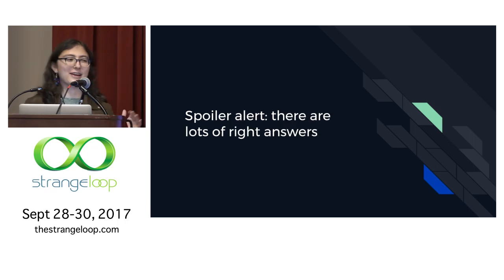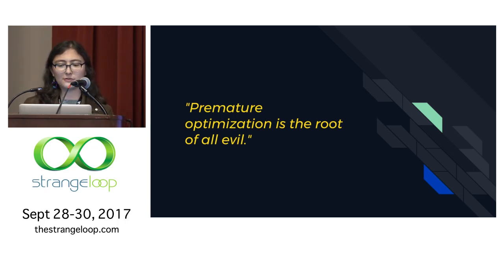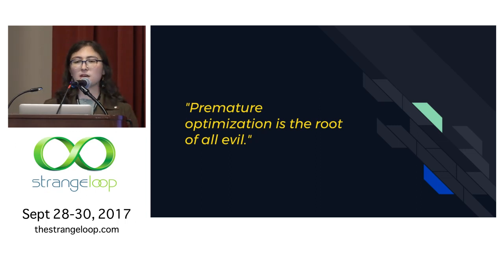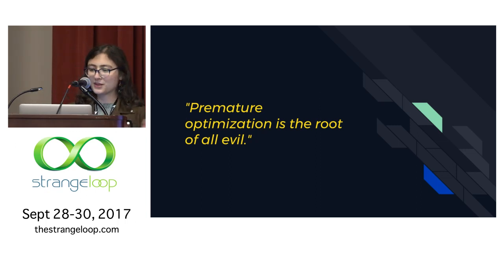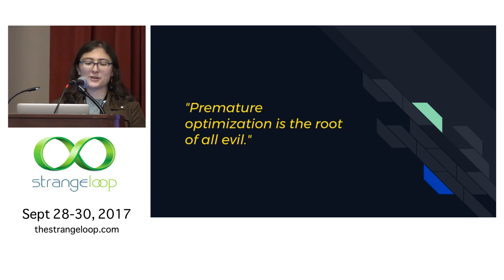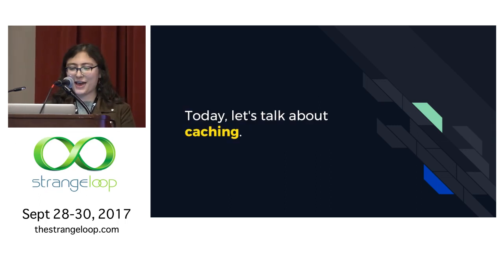There are several right answers. I'm stealing this quote from Donald Knuth: premature optimization is the root of all evil. The answer to how you should scale will always depend on the specifics of your use case. The first step is to measure and figure out what your problems actually are. Maybe you need more instances, shard your databases, or sprinkle some queues on top. Today we're talking about caching.